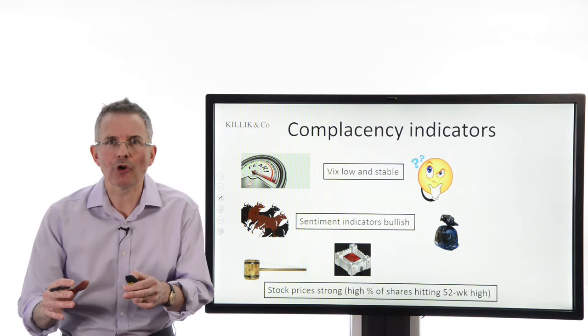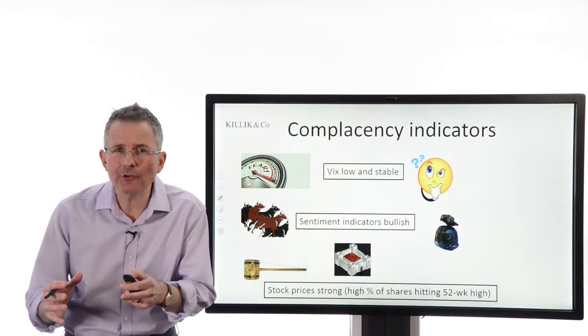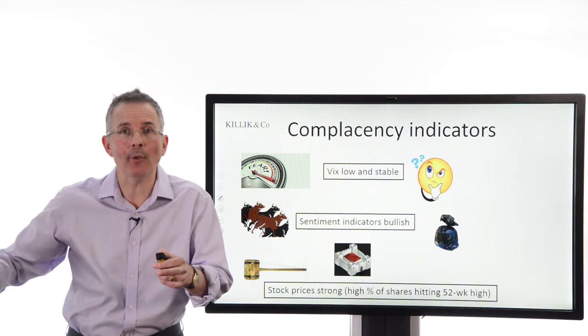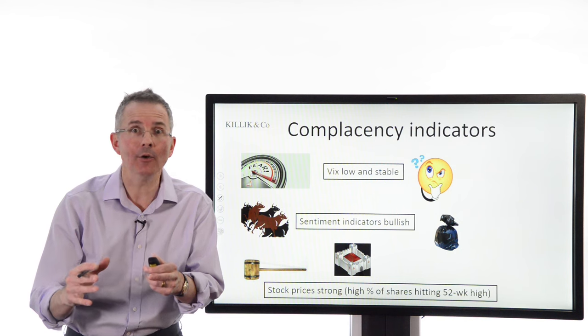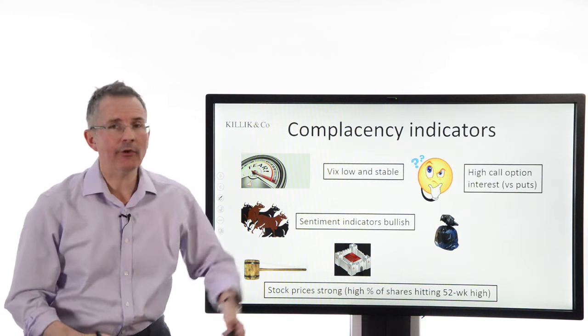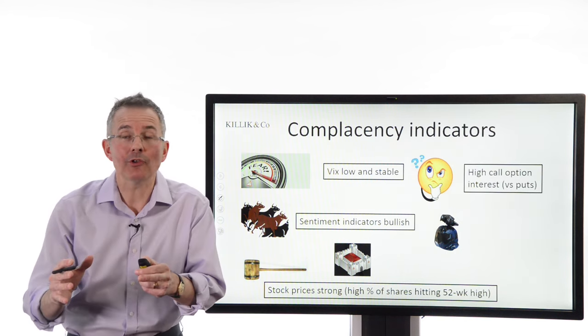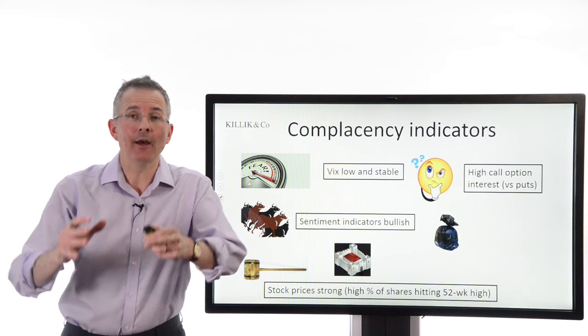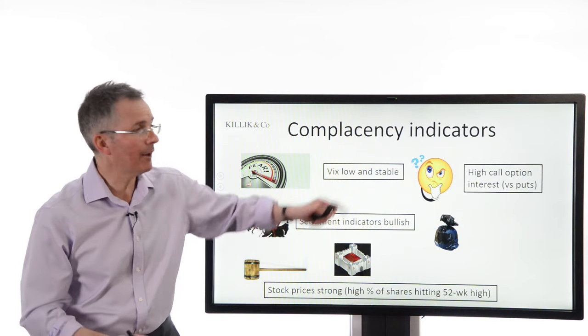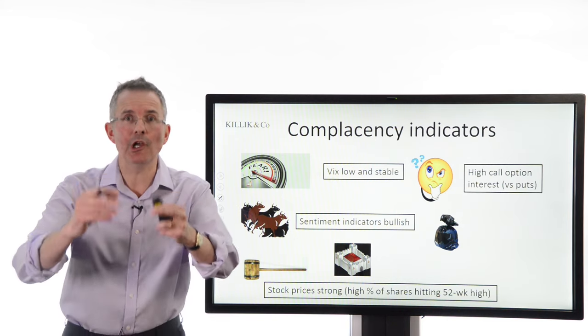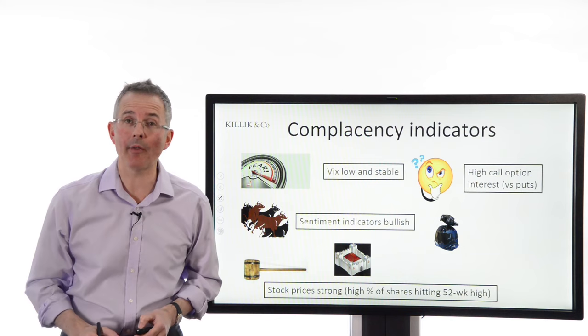Number three, stock prices are strong. In other words, you've got a high percentage of shares hitting 52-week highs, as opposed to bashing through 52-week lows. Next, you've got bets on share prices rising in the derivatives market more than falling. That translates as high interest in call options versus put options. And there is a ratio you can look for that indicates where you are on that scale.